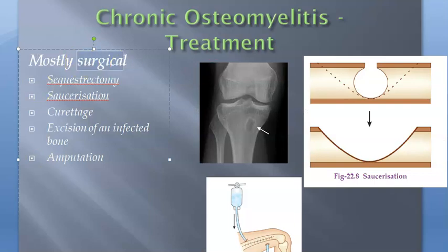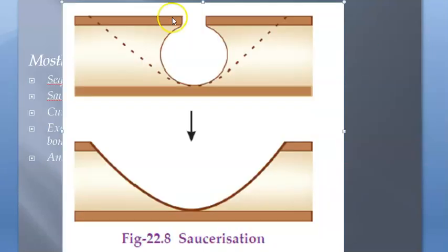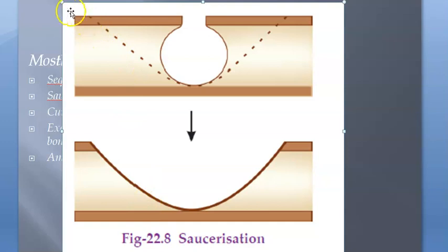First, sequestrectomy — you just remove the sequestrum. Then saucerization: the cavity inside is opened up and converted into a saucer shape, which allows free drainage of infected material. So you are converting the cavity into a saucer to facilitate drainage.